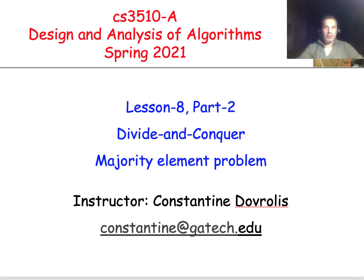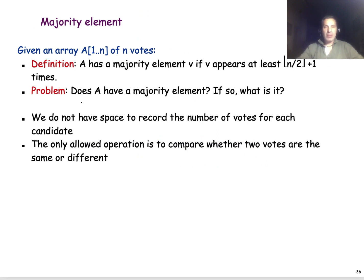In this second part of lesson 8, we will look at another very interesting problem in which we try to find if an array has a majority element. We are given an array A of N elements — think of them as votes. We define that this array has a majority element if there is an element V that appears at least N over 2 plus 1 times.